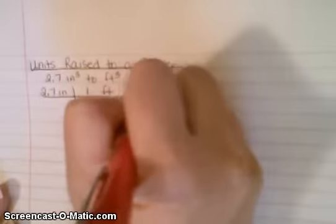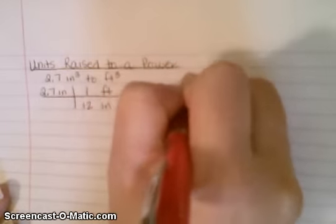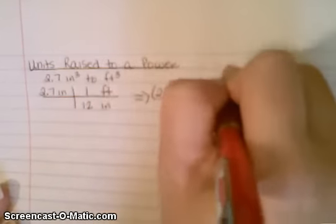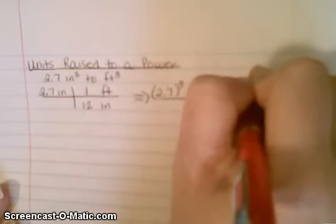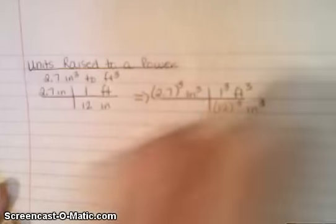Now the other thing that's missing here is the cubes. So in order to get those, we need to cube everything we see inside. So that will become 2.7 to the third inches cubed, and then over here we'll have one to the third feet cubed, 12 to the third, and inches cubed.